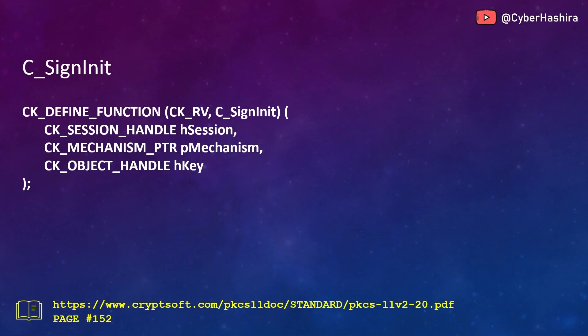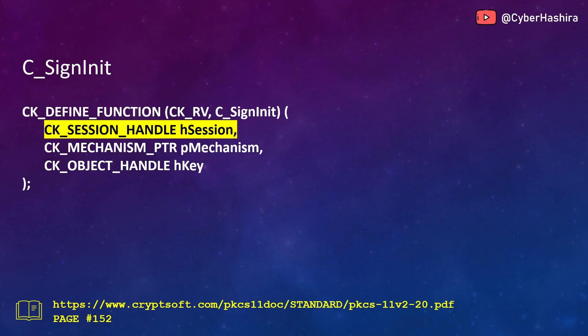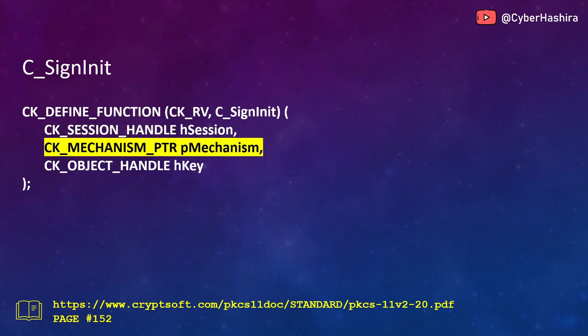I will start with C_SignInit. When signing some data, C_SignInit should be your first function call. It initializes the memory with the information required to begin the signing process. This function takes three arguments. As with many other PKCS11 functions, the first argument of C_SignInit is a session handle number. The second argument is the mechanism you wish to use for signing the data.